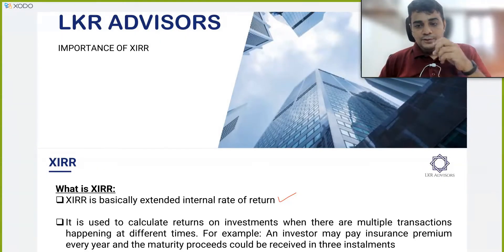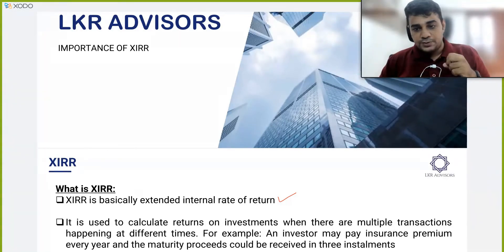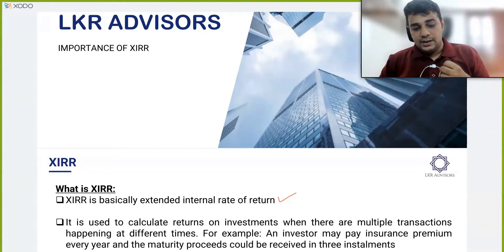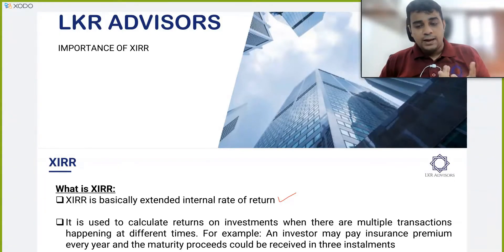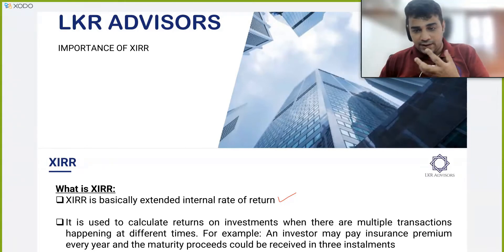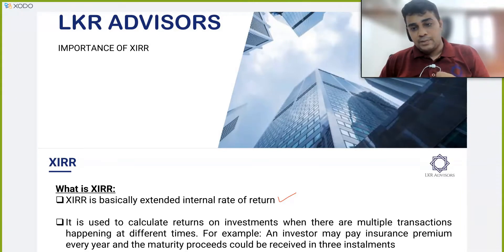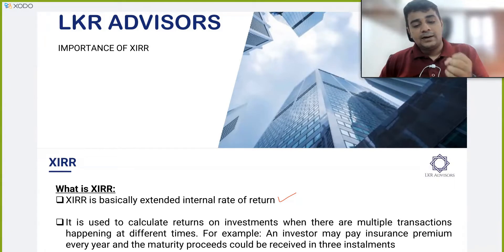For example, if you are buying a LIC life insurance investment option, you will pay insurance premium every year and may get a lump sum amount at the end of the period, or you may get it in multiple tranches. For instance, in child money-back plans, you pay around 20,000 every year for 10 to 15 years, and at the age of 18, 20, and 25 you get back different amounts at different points of time.